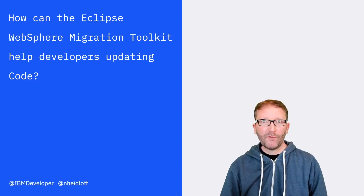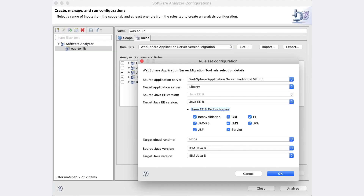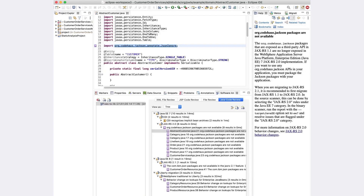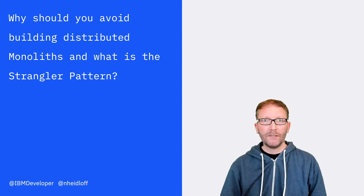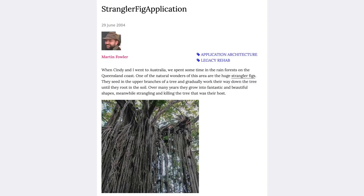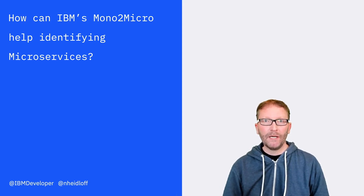Question number four: how can the Eclipse WebSphere Migration Toolkit help developers updating source code? Question number five: why should you avoid building distributed monoliths, and what is the strangler pattern? Question number six: how can IBM's Mono2Micro tool help identifying microservices?